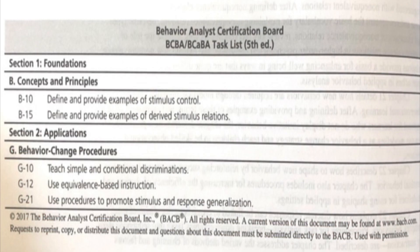This area covers the task list items B10, define and provide examples of stimulus control; B15, define and provide examples of derived stimulus relations; G10, teach simple and conditional discriminations; G12, use equivalence-based instruction; and G21, use procedures to promote stimulus and response generalization.